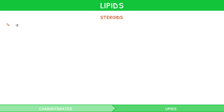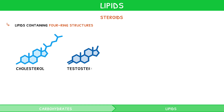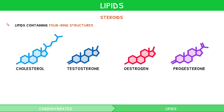Steroids are lipids containing four ring structures. They are mostly found in the form of cholesterol and other hormones such as testosterone, estrogen and progesterone. Whilst you do not need to know how to draw the structure of a steroid, you could be asked to recognise them in a multiple choice question.